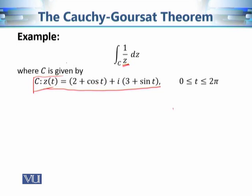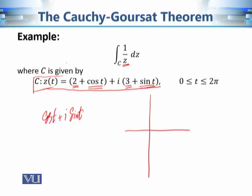The x-component is 2 plus cosine t, meaning there is a translation of 2 along the x-axis in the values of cosine t, and there is a translation of 3 in the values of sine t. We know that cosine t plus i sine t is a circle when t varies between 0 and 2π. Since we translated 2 units along the x-axis and 3 units along the y-axis, it is a circle of unit radius.